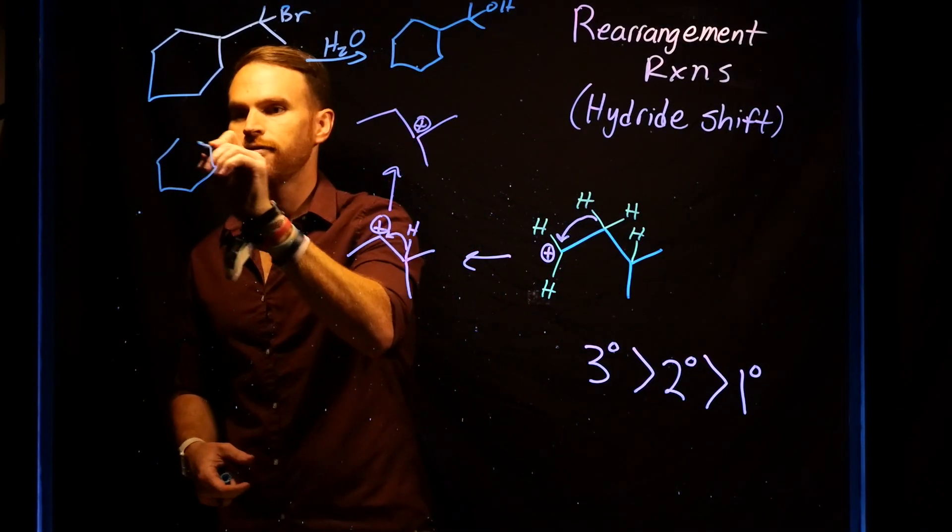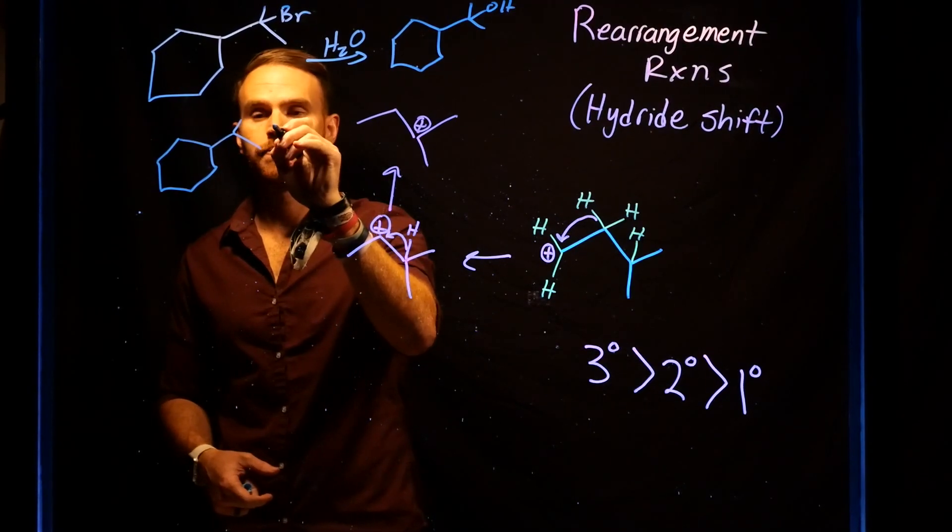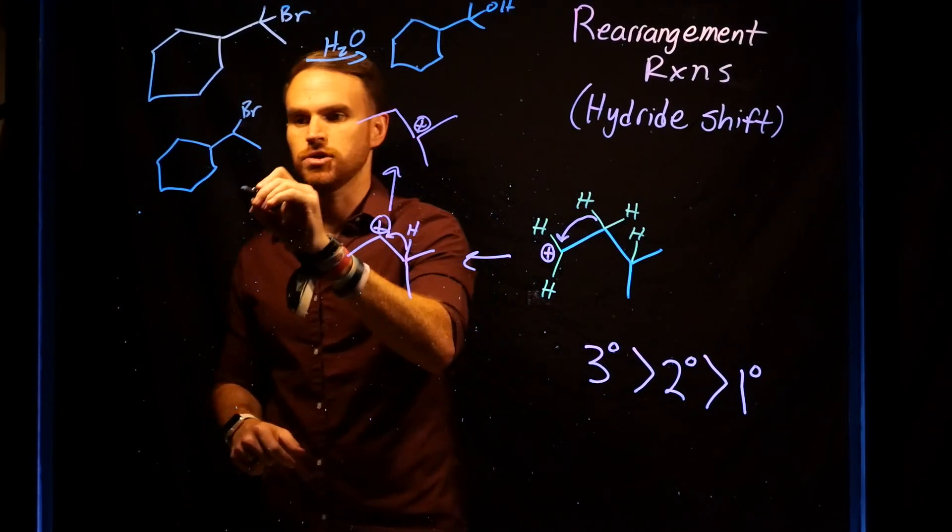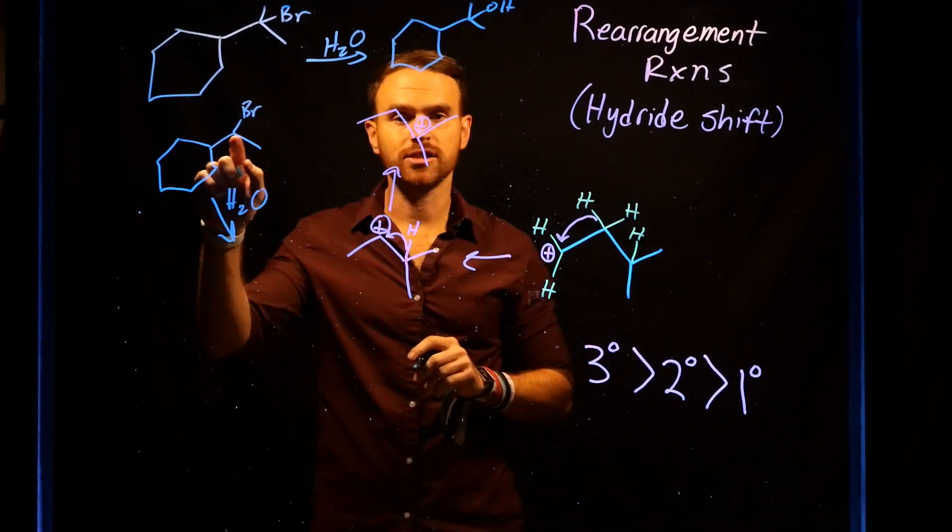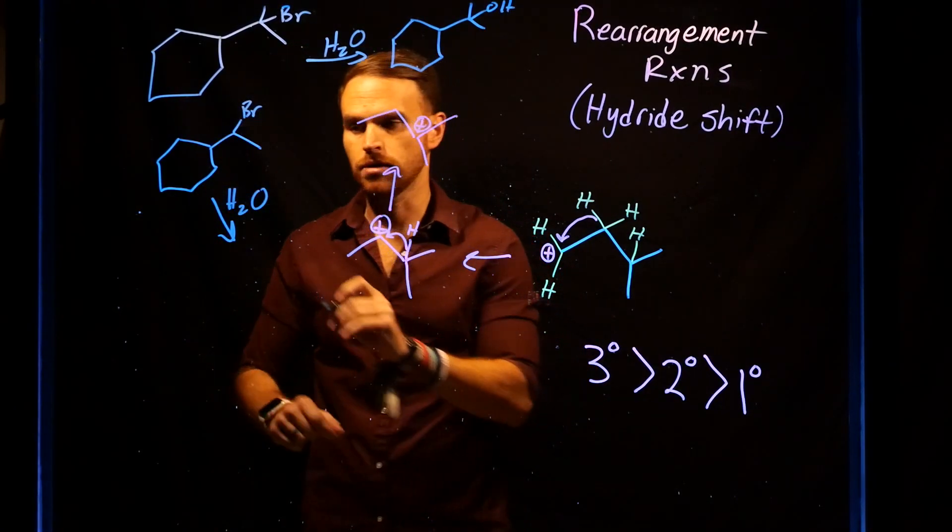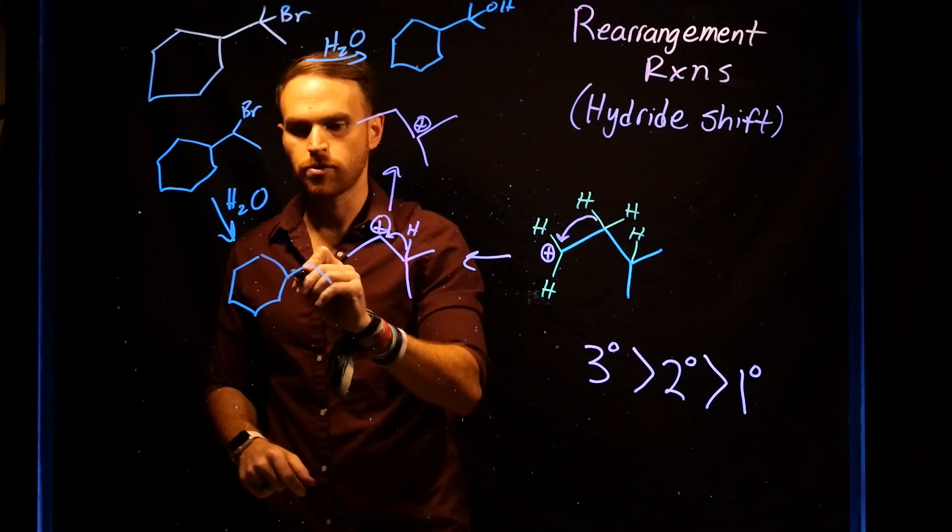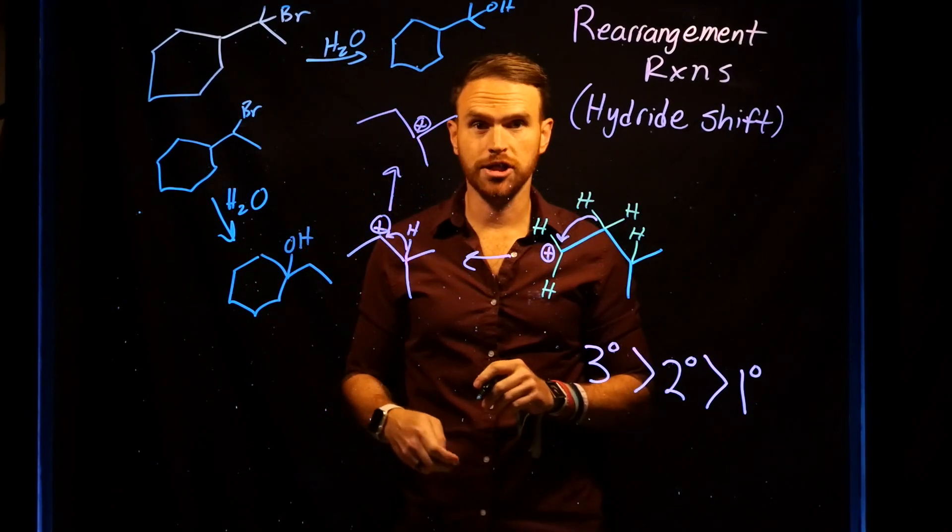However, if we had a molecule where the substitution reaction was occurring, but instead this was at a secondary position, what you would find is that you wouldn't get a substitution at the current position. In fact, what would happen is you would generate the alcohol on the tertiary carbon species.